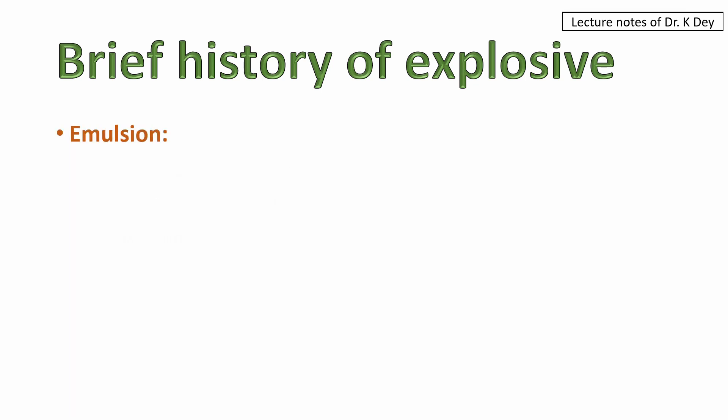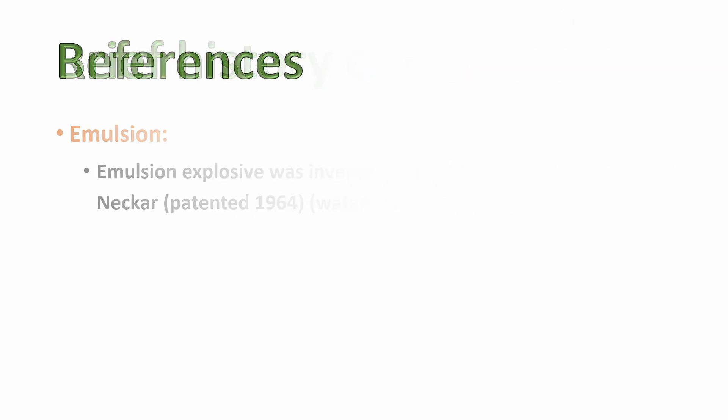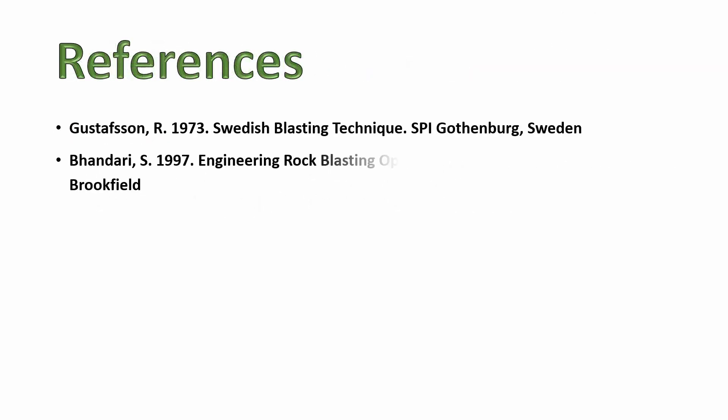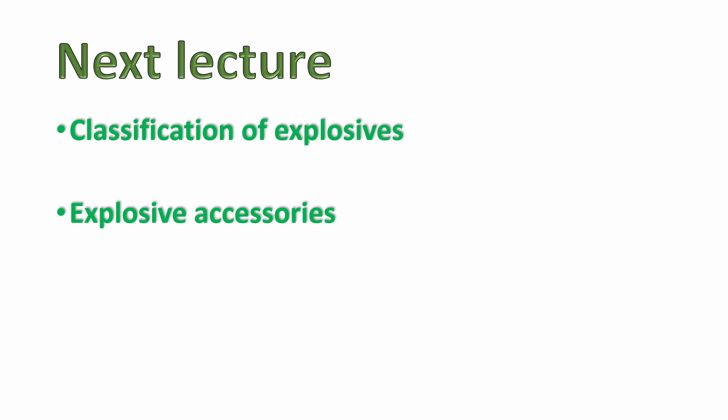Next is emulsion. Emulsion explosive was invented in 1961 by Richard Eadie and Albert Necker, and patented in 1964. It is a water-in-oil emulsion. Here are the references for your reading. In the next lecture, we will see the classification of explosives and the explosive accessories.